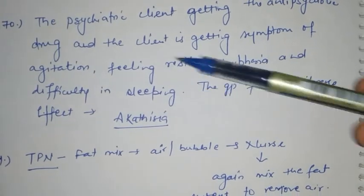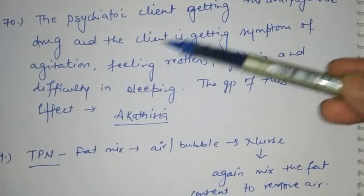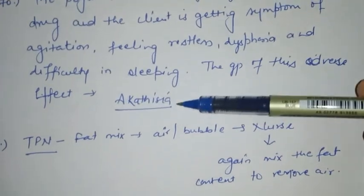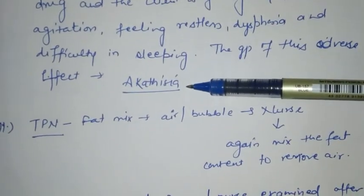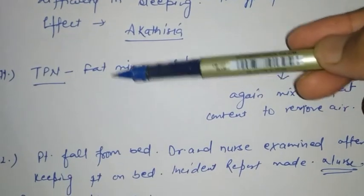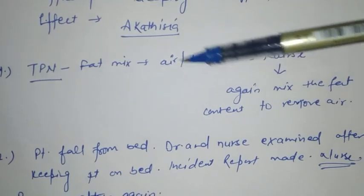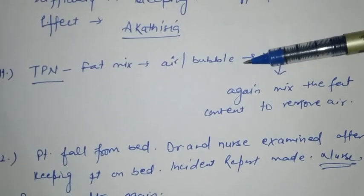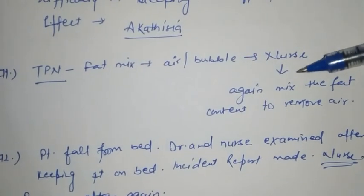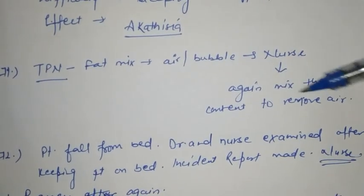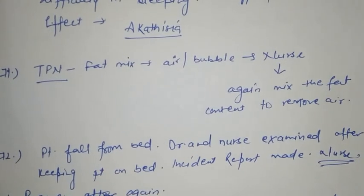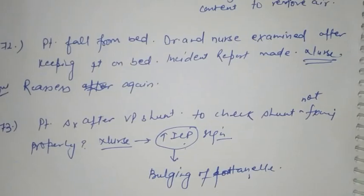Next question: a psychiatric client receiving an antipsychotic drug is presenting with symptoms of agitation, feeling restless, dysphoria, and difficulty in sleeping. These signs and symptoms indicate that the person is having akathisia.